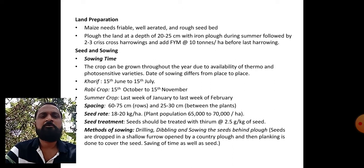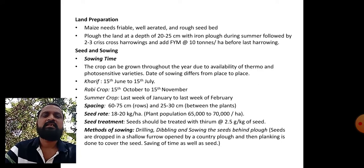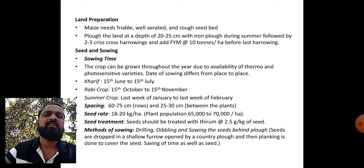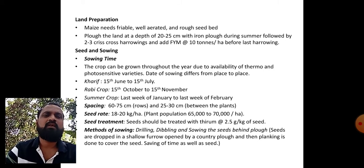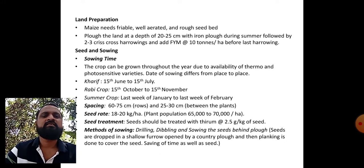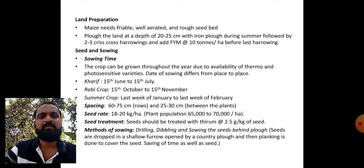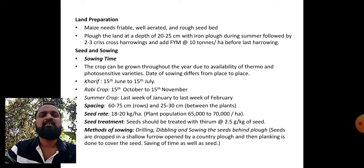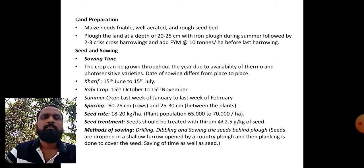Spacing: 60 to 75 centimeter row to row, and 25 to 30 centimeter between plants. Seed rate: 18 to 20 kg per hectare is required, which helps to maintain plant population of about 65,000 to 70,000 per hectare. Seed treatment: seeds should be treated with Thiram at the rate of 2.5 grams per kg of seeds to avoid seed and soil-borne diseases.